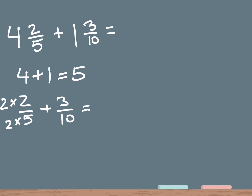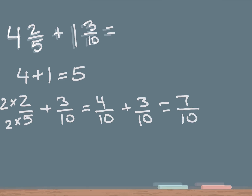So 2 times 2 is 4, and 2 times 5 is 10, and we're going to add 3 over 10. Now we have a common denominator of 10, so the bottom numbers are the same. The next step is to just add the two top numbers. So we do 4 plus 3, which is 7, and the bottom number remains the same — 10.